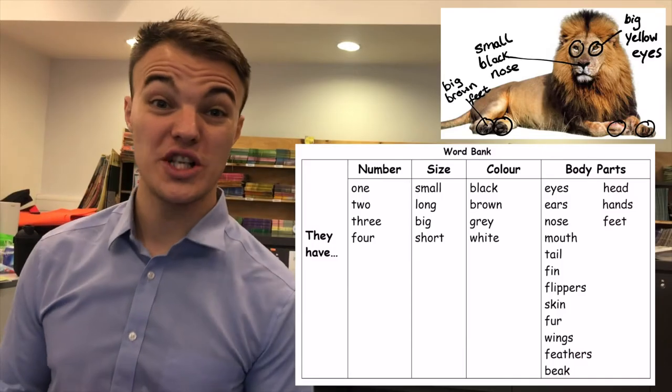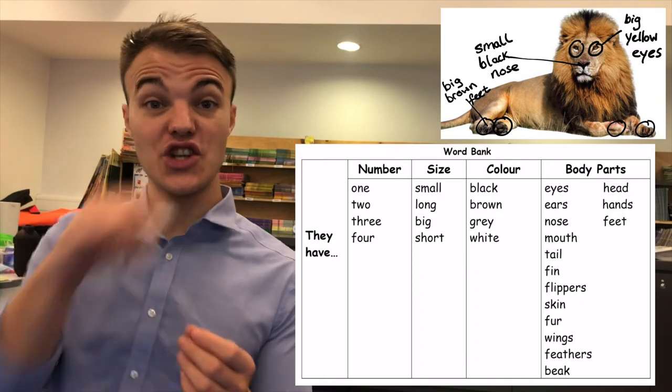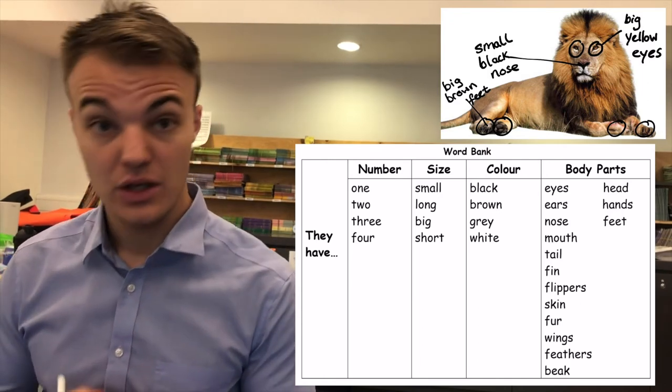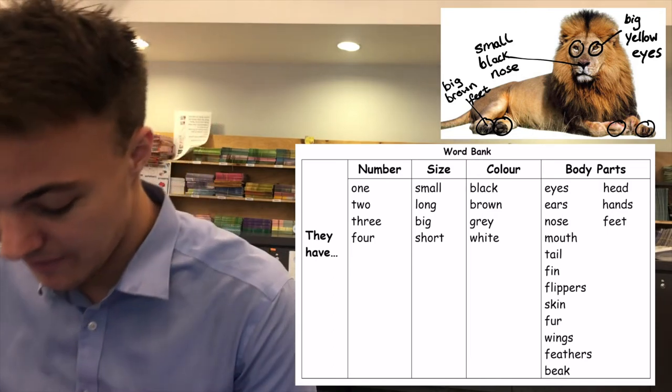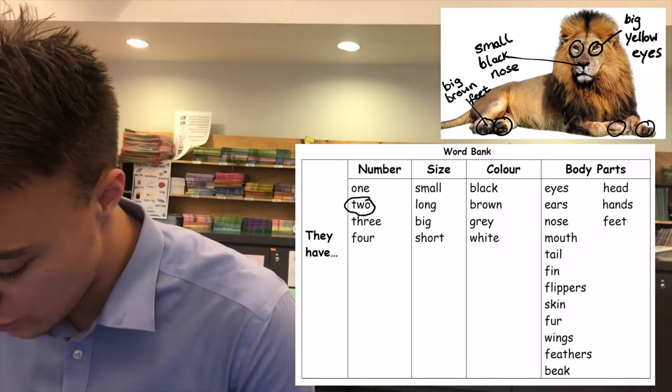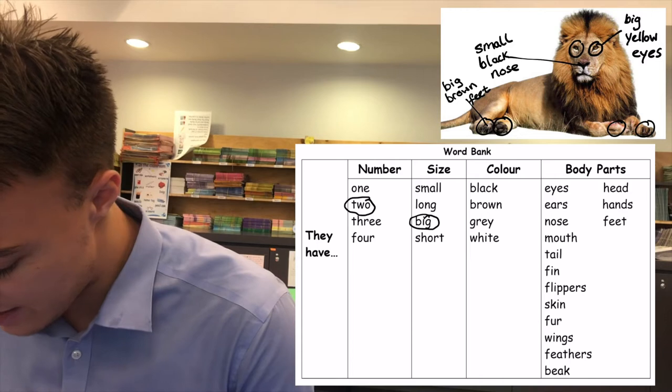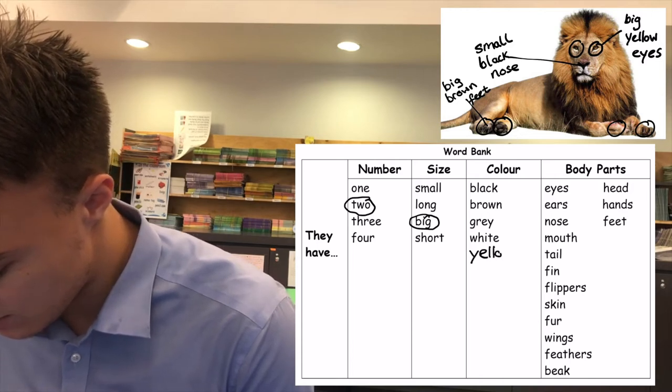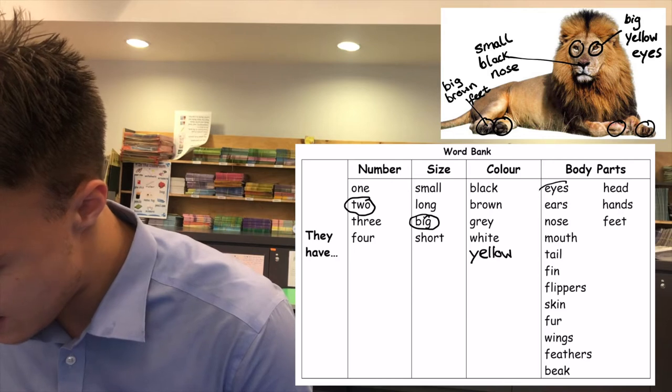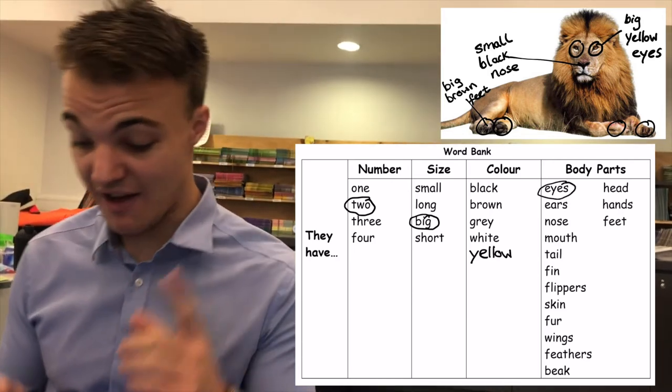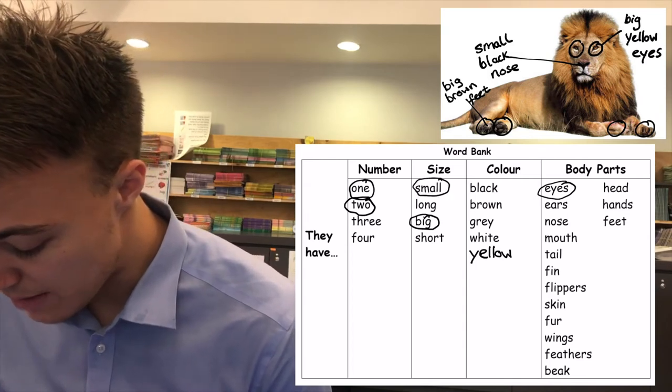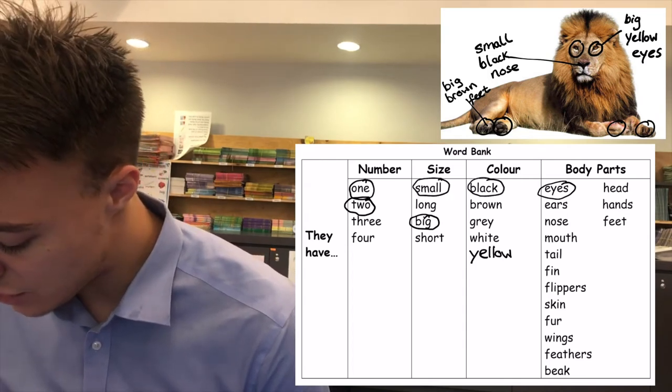Here's the word bank for this writing. So now I can circle the words that tell me what the lion has. So lions have two big yellow eyes. And they have one small black nose.